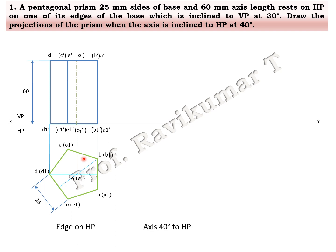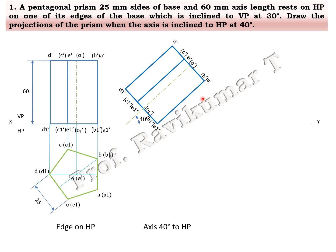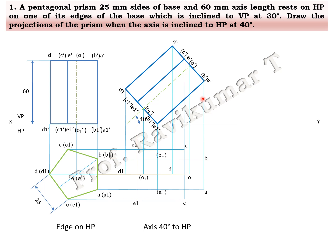The second position: the axis is inclined to HP at 40 degrees. One axis is inclined to HP and the other edge is inclined to HP — so this is a without locus problem. I rotate the figure to 40 degrees by taking a point and rotating it. The naming is copied from the first position. Next, draw projection lines — draw only up to where points intersect. The naming A, B, C, D, E is done for this second position.